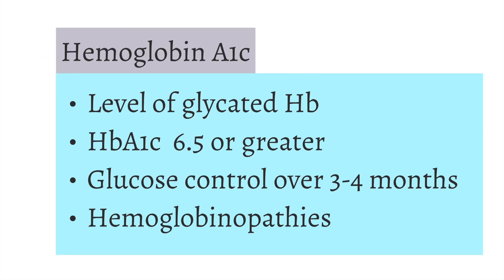The last test is called hemoglobin A1c. Hemoglobin is a complex protein in red blood cells that binds oxygen to transport it to our cells. The hemoglobin A1c test specifically looks for a type of hemoglobin called A1c, otherwise known as glycated hemoglobin. Simply put, this is a form of hemoglobin that has become attached to a glucose molecule.